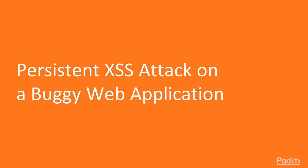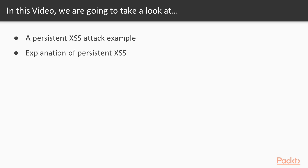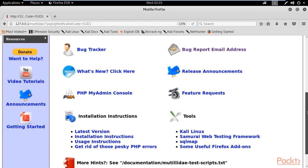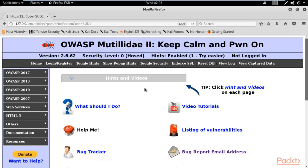In this video we are going to look at a persistent XSS attack on a buggy web application. We will learn what a persistent XSS attack is, and I will show you an example of how to perform it. First, you need to open Kali Linux operating system and inside Kali Linux open Mutillidae. We are going to perform the persistent XSS attack on Mutillidae. Here we are at the home page of Mutillidae.